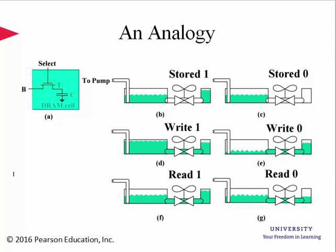Similarly, a 0 can be written as well. On the other hand, we can read a 1 while the bus is not fully charged — if we sense a level rise in the charge on the bus when the transistor is switched on, we can detect that a 1 is stored on the capacitor. Similarly, if the charge level drops once the switch is turned on, we detect a 0 value.